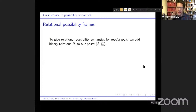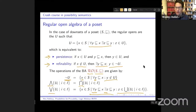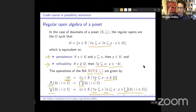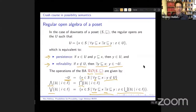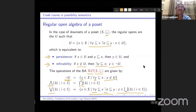Any complete Boolean algebra arises as the regular open algebra of a poset: take the Boolean algebra, delete the bottom element, and let the lattice order be your partial order. When the partial order is just equality, every subset is regular open, giving back the power set algebra — and thus classical possible world semantics. So possible world semantics is the special case of possibility semantics where the partial order is equality.